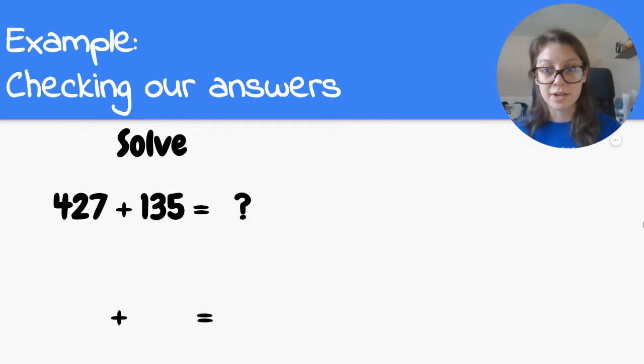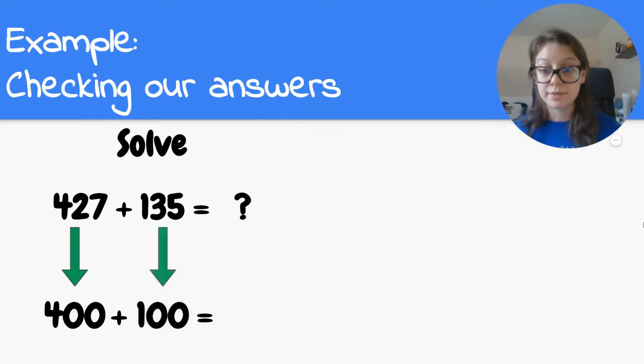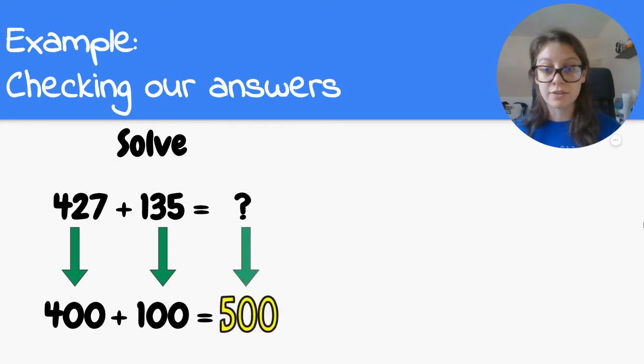Well, I'm going to think, 427, that's close to 400. 135, that rounds to 100. So 400 plus 100 equals 500. So I know that my reasonable estimate for my answer is going to be about 500. So my answer should be close to 500.